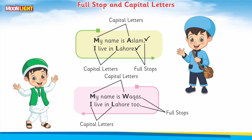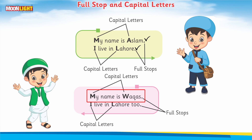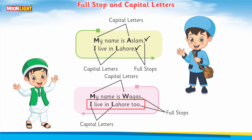Vakas is also saying 'My name is Vakas' — writing M with capital, and when he writes his name he writes capital W. Then he says 'I live in Lahore too' — writing I in capital, and L of Lahore in capital form — and then puts a full stop.